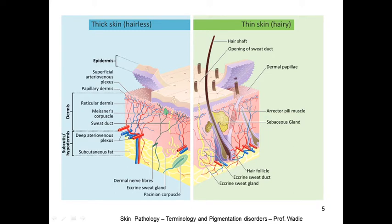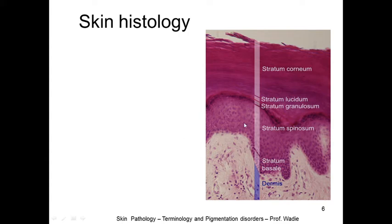You also have to be used to the dermis fibers scattered in the skin. The skin histology is composed of superficial layers: stratum corneum, then stratum lucidum, stratum granulosum, stratum spinosum, and the stratum basale. Going from below upwards: dermis, stratum basale, stratum spinosum, stratum granulosum, stratum lucidum, and stratum corneum.